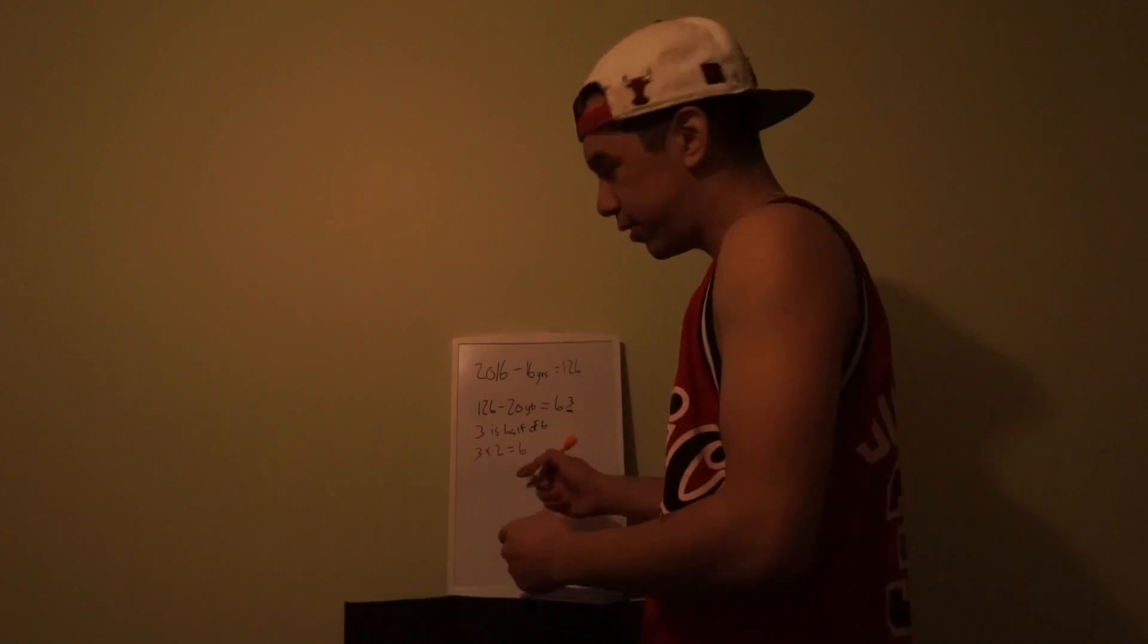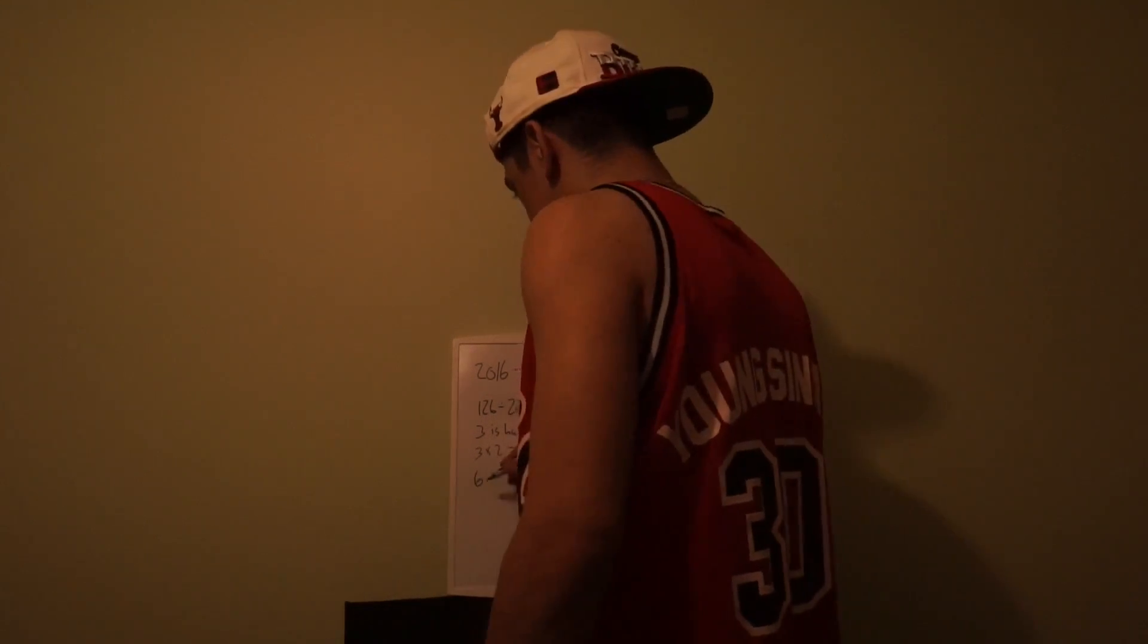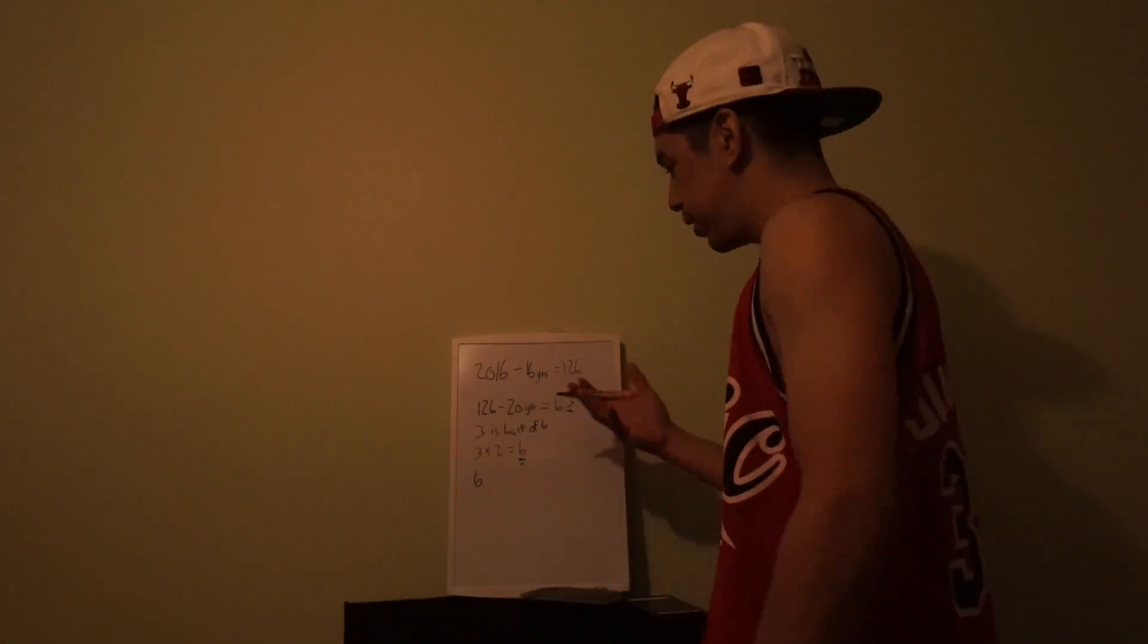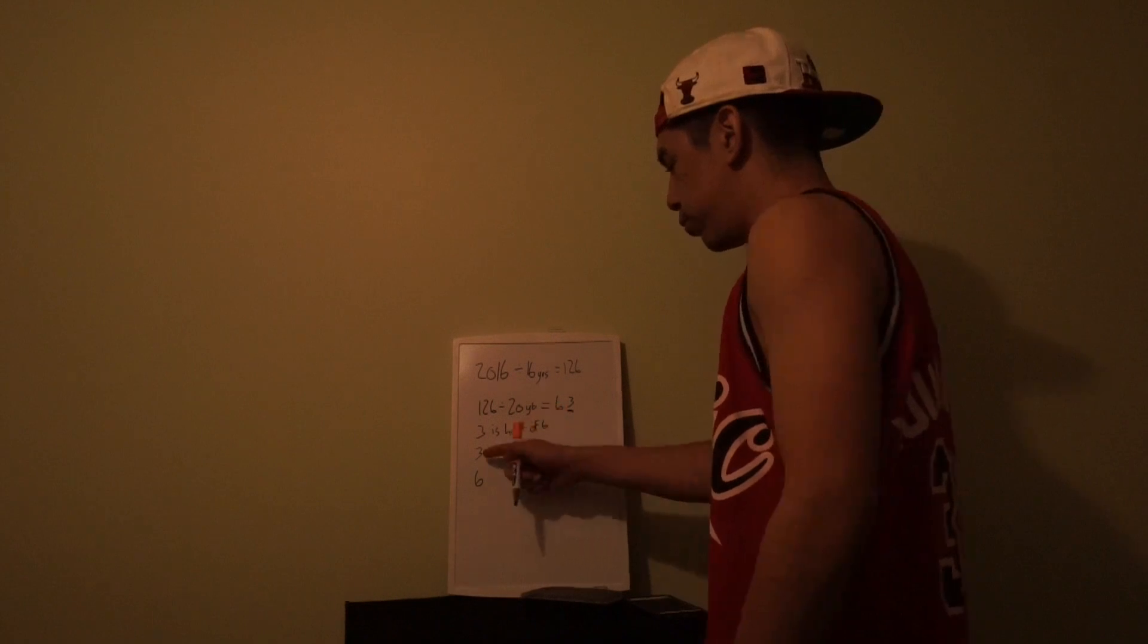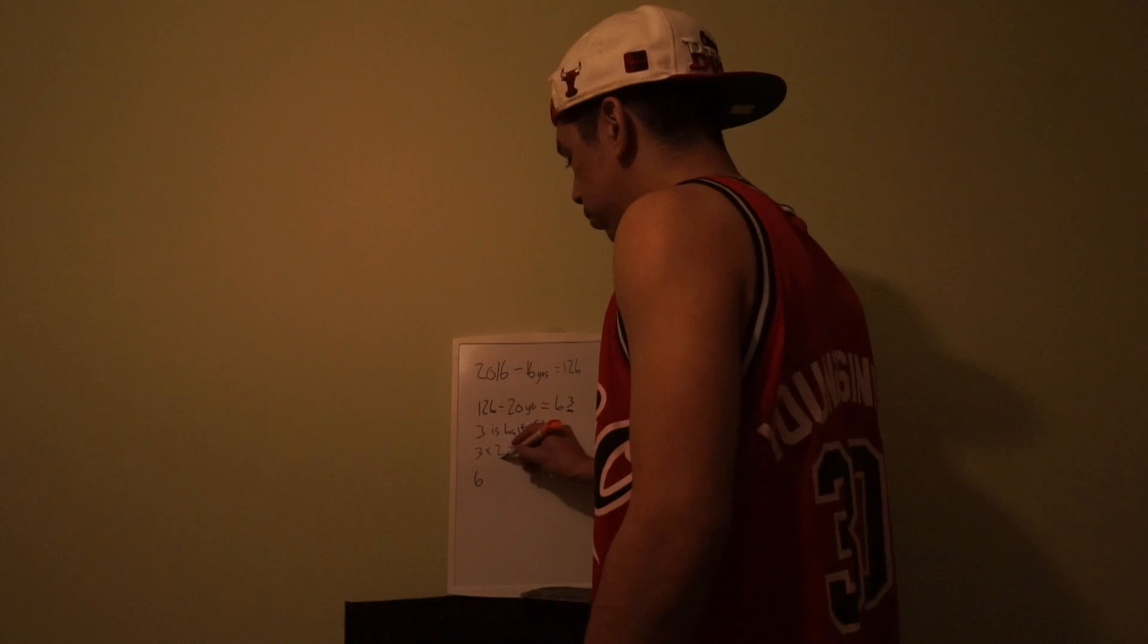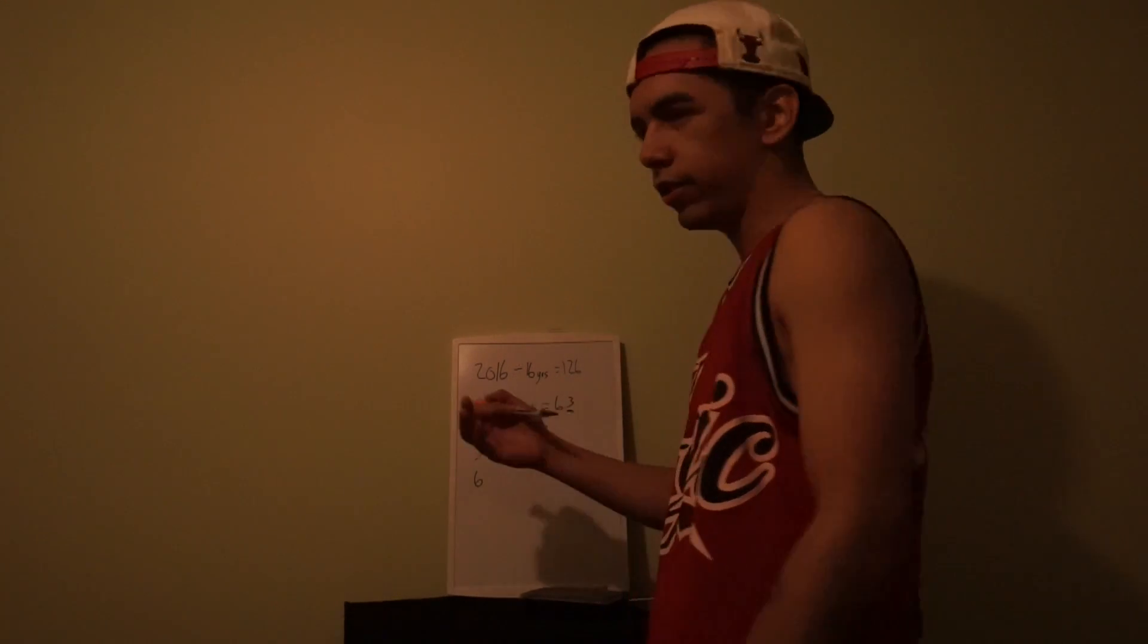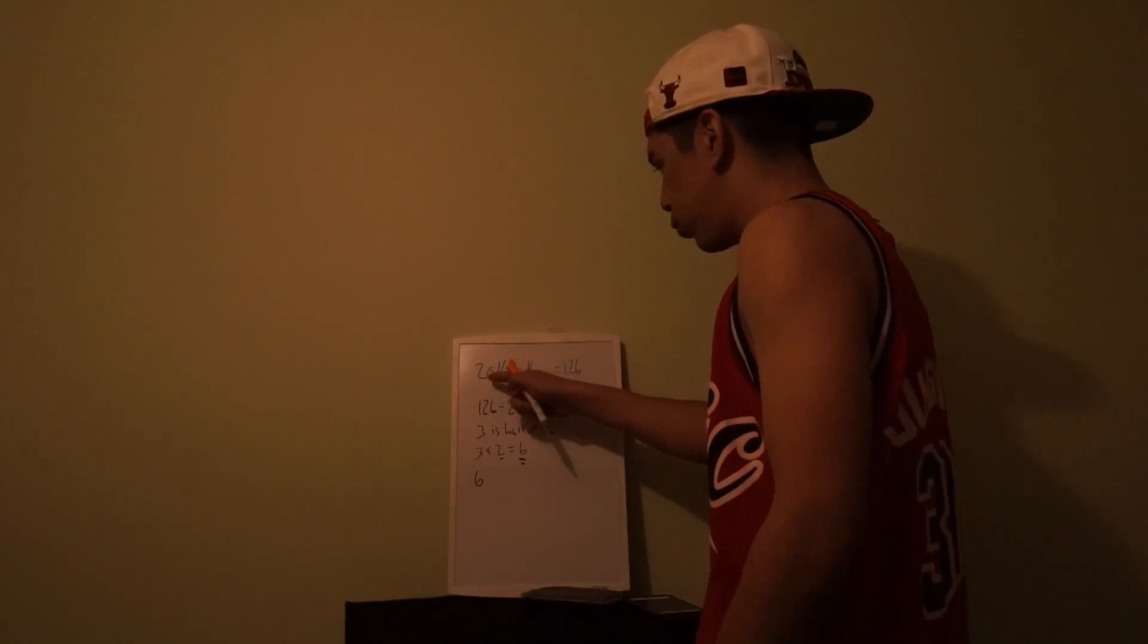So we're going to take this six, this answer right here. Because three is half of six and three times two is six, we're going to take that two. And we're going to forget about this three, we're going to take that two.